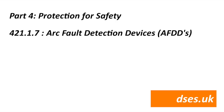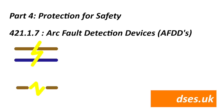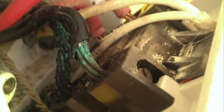On to protection against thermal effects and Regulation 421.1.7 — the use of arc fault detection devices, or AFDDs, also known as arc fault circuit interrupters or AFCIs to our American cousins, where they've been in use for some time. An AFDD is a clever bit of electronics that can detect an arc between conductors or on a series line and cut the power before thermal damage causes a fire. The electronics detect different arc signatures, so a natural arc when a mechanical switch is thrown won't trip the device, but an arc across a loose connection or between cores on a damaged cable will actuate it — the kind of fault that causes burnt-out shower isolators.